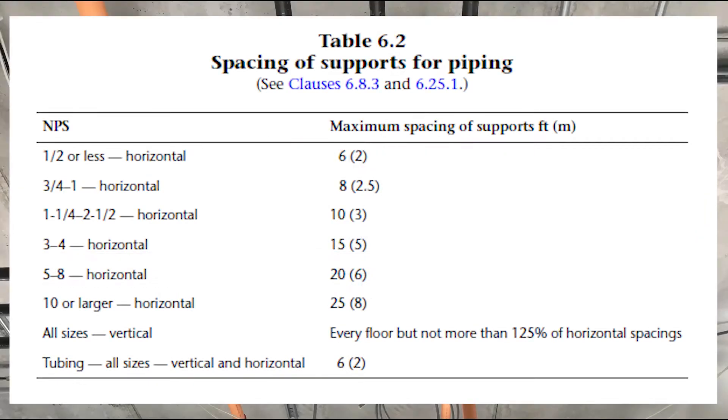First I need to look in table 6-2 to find the appropriate hanger spacing for one and a quarter inch black iron pipe. Looking at the NPS column down to one and a quarter to two and a half inch, then going across to the right, I find hanger spacing is 10 feet maximum.